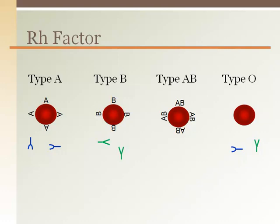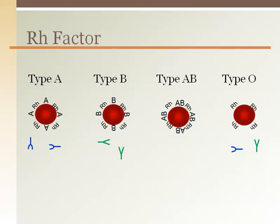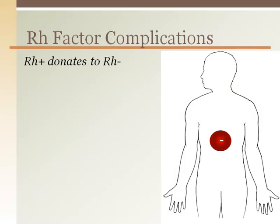The Rh factor — whether or not a person's blood type is positive or negative — depends on another surface marker. If the Rh factor is present on the surface of a blood cell, the person is considered to be positive for the Rh factor. When considering blood type compatibility, not only is it important to consider the plasma antibodies for the surface markers A or B, but whether or not the person is Rh positive or Rh negative.